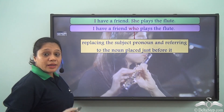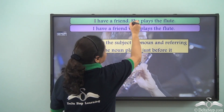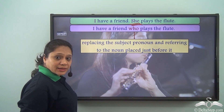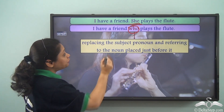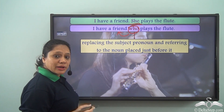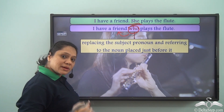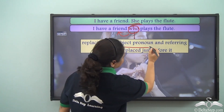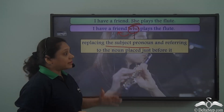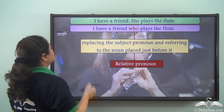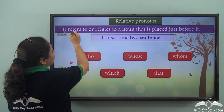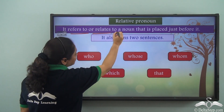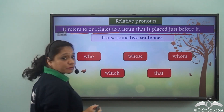So what have we done here? We have replaced the subject pronoun of the second sentence with the word 'who.' Now 'who' is referring to the noun placed right before it: 'friend.' So 'who' is a pronoun and it is replacing the subject pronoun, and these kinds of pronouns are known as relative pronouns. A relative pronoun refers to or relates to a noun that is placed just before it.